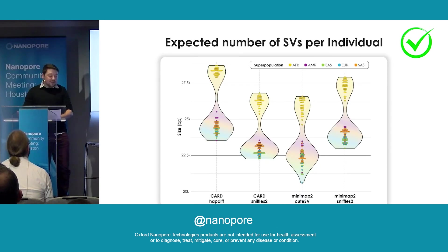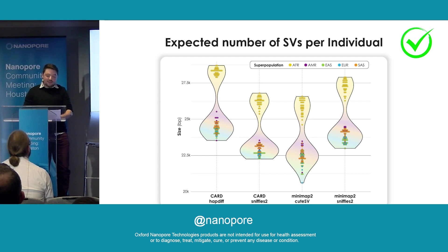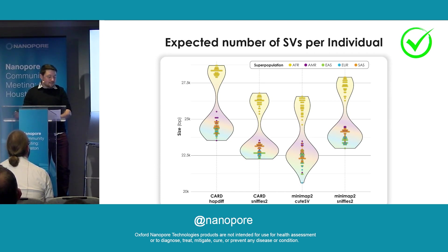I'm also looking at the number of structural variants per individual by four different methods, and for each method we're in the ballpark of 25,000 structural variants per genome, with samples of African ancestry having more structural variants per genome, which is to be expected.